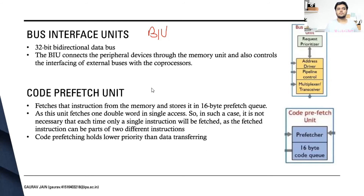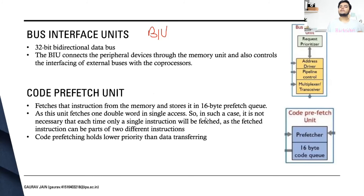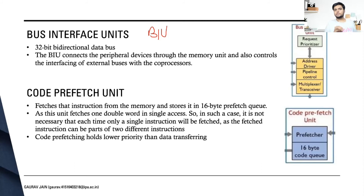The code prefetch unit fetches instructions from memory and stores them in a 16-byte prefetch queue — a first-in, first-out data structure, so the instruction with higher priority that came in first will be executed first. Also, the code prefetch unit has lower priority than data transferring. If there is an instruction for data transfer at the same time an instruction is being fetched, bus priority is given to data transferring, and control is returned to the bus interface unit to perform the data transfer.